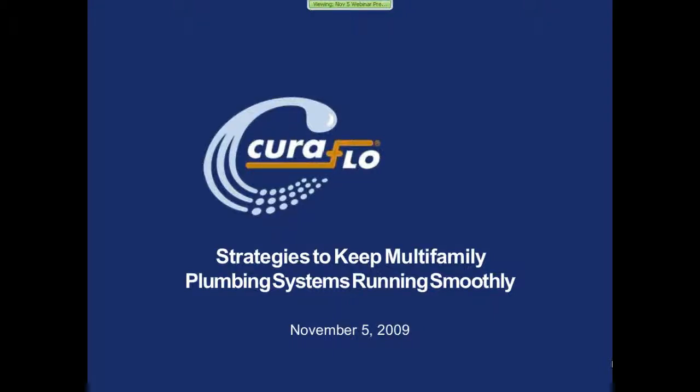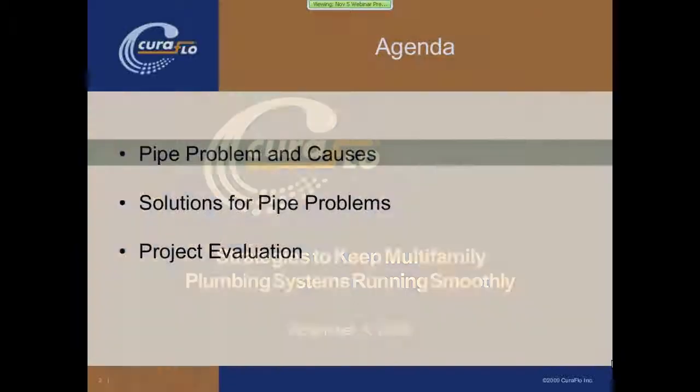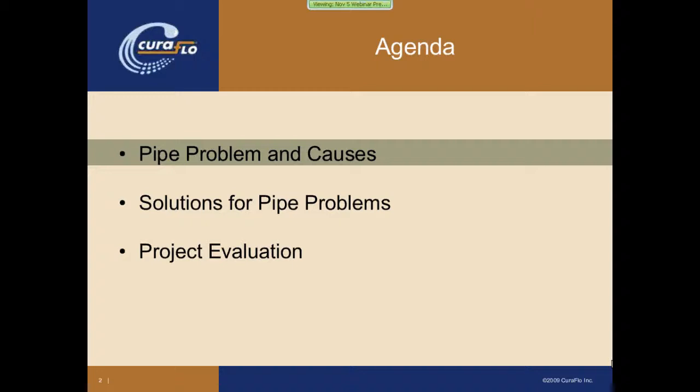Today we're going to talk about strategies for keeping multifamily plumbing systems running smoothly. We're going to cover three main topics: pipe problems and their causes, what the various solutions are for pipe problems, and then project evaluation — how do you go about solving the problems, coming up with the solution, and evaluating your various options.